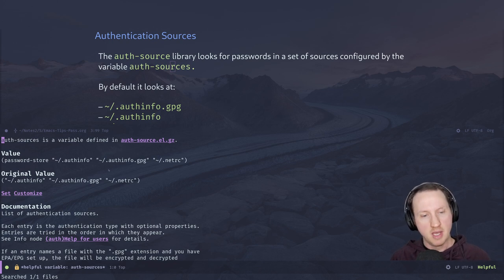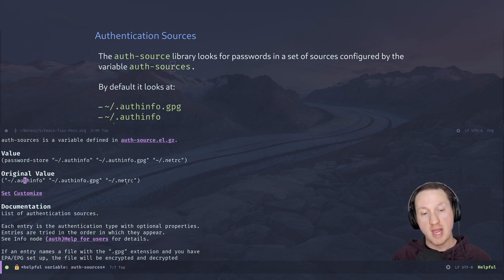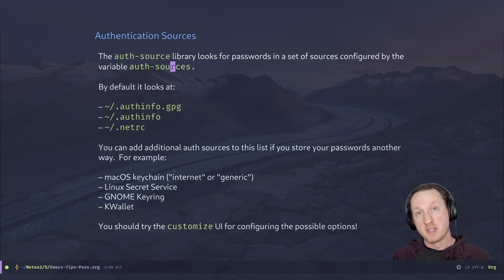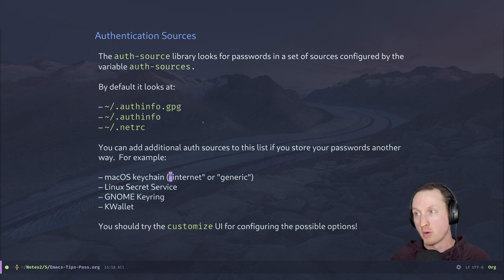In my configuration — though not what you should look at — the original value shows there is a file called .authinfo, also .authinfo.gpg, and then a .netrc file. These are all text files that store password information in a specific format. The auth-source library can also interface with keychains on macOS and Linux — for example, the macOS keychain has both an internet and generic keychain that auth-source has a backend to communicate with.